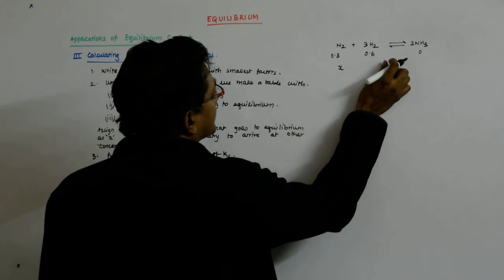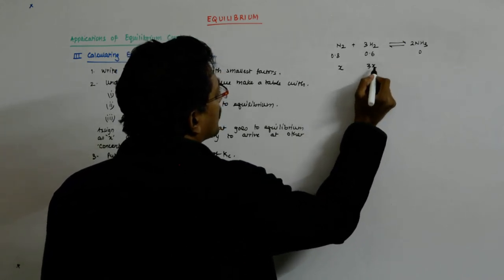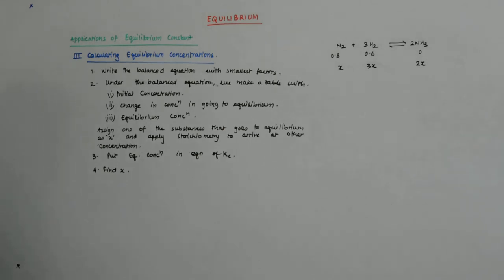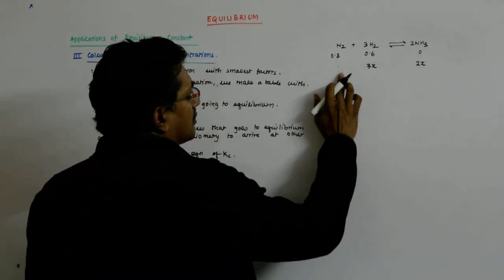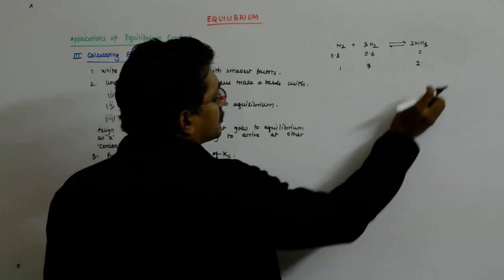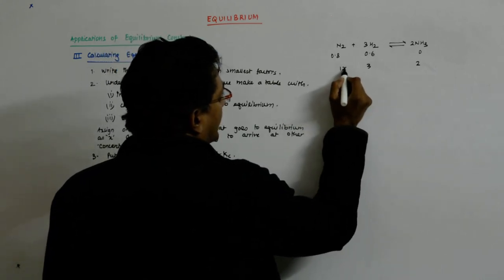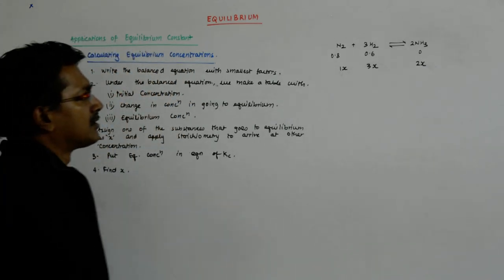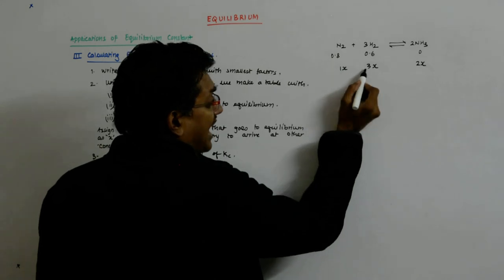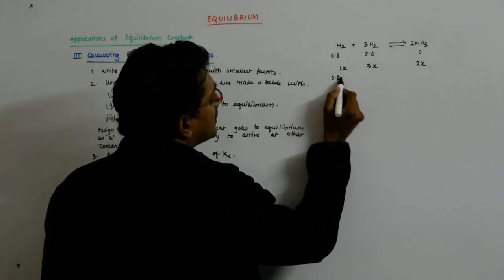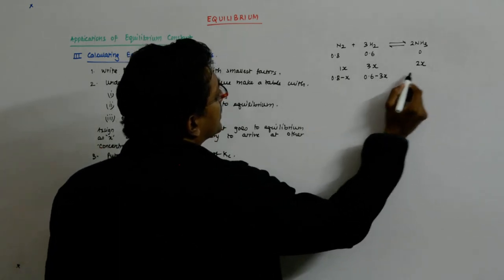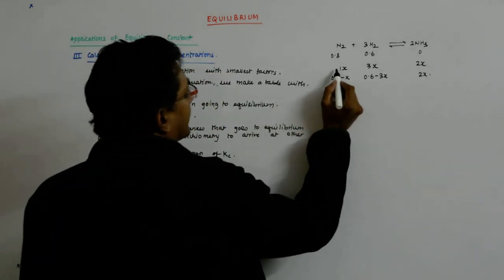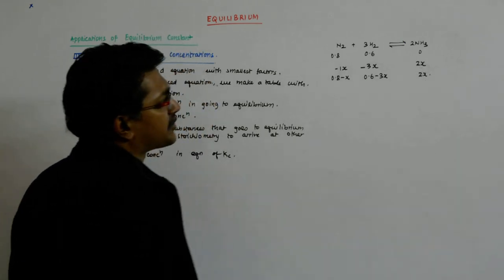You might as well write that X moles of this reacts with 3X moles of this to give you 2X moles of this. Because one mole reacts with 3 moles to give 2 moles, so 1X mole reacts with 3X moles to give 2X moles. This is what has reacted, so what is left is the difference of the two. If you get confused, do this. These react so they are negatives, and that gets produced, and then you add them.